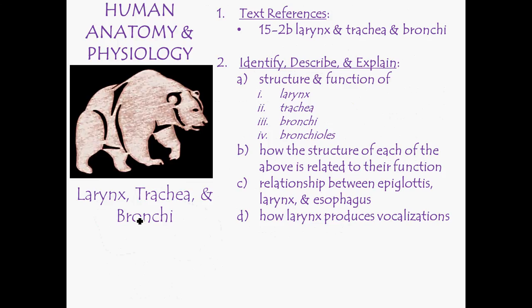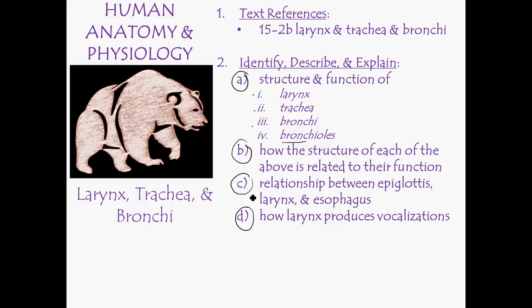So that covers a lot of detail about the structure and function of the larynx, the trachea, and the bronchi. We'll deal with the bronchioles in another screencast, covering more microscopic anatomy. To summarize: we discussed the structure of each component and how it relates to function, the relationship between the epiglottis, larynx, and esophagus during swallowing, and how the larynx produces vocalizations. Thanks for listening — bring your questions to class.